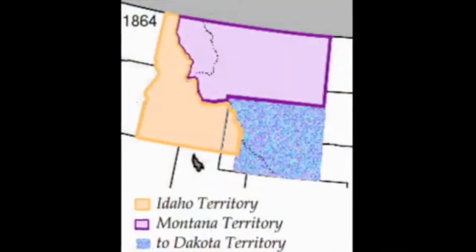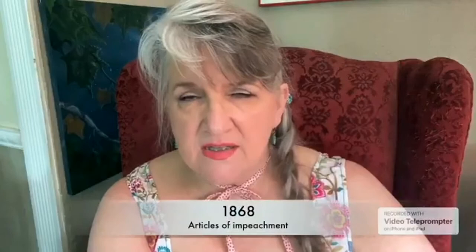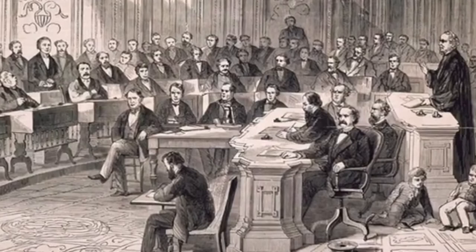Montana was organized as a United States territory on May 26, 1864. On May 26, 1868, the impeachment of Andrew Johnson ended with his acquittal by one vote.